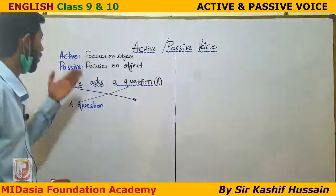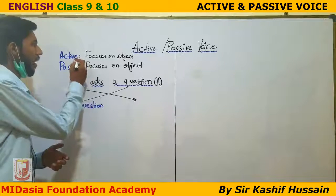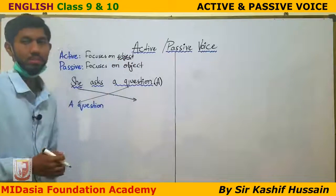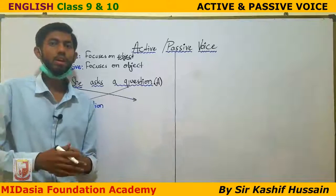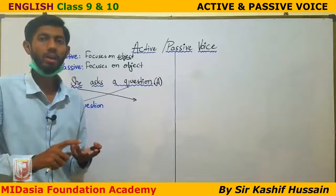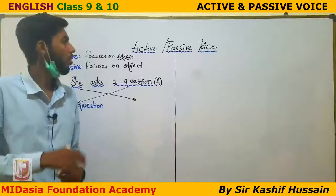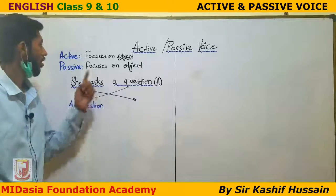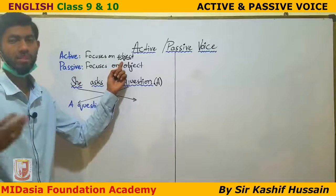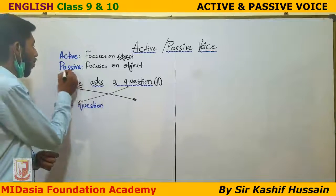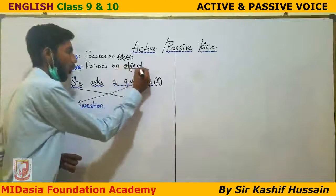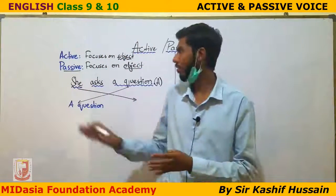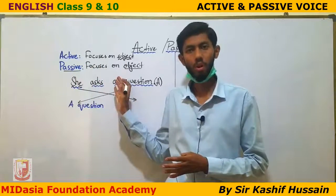Let's begin. What is active voice and what is passive voice? Basically, active voice focuses on the subject. The subject is called the doer of an action — pronouns like I, we, you, they, he, she, it, and singular names. Those nouns or pronouns that are performing actions are in active voice. Passive voice, on the other hand, focuses on the object, or the receiver of an action. Active voice always focuses on the subject, whereas passive voice always gives more priority to the object.